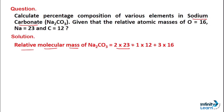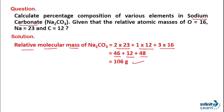The relative molecular mass of Na₂CO₃ will be: 2×23 + 1×12 + 3×16. Sodium has 2 atoms, so 2×23 (where 23 is the relative atomic mass of sodium); carbon has 1 atom, so 1×12; oxygen has 3 atoms, so 3×16. Solving this: sodium gives 46, carbon gives 12, and oxygen gives 48. So the relative molecular mass of sodium carbonate is 106 grams.